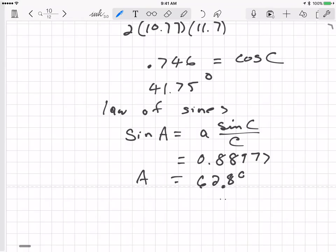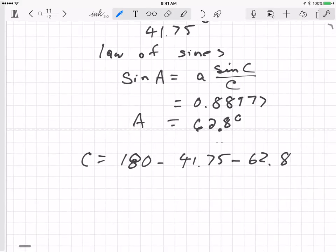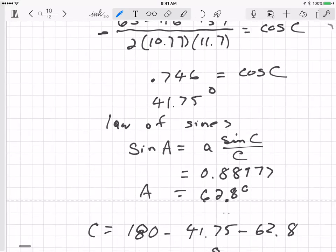Okay, now if I know the angle for A and I know the angle for C, I should be able to find the angle for B using the fact that the sum of the three angles has to be 180 degrees. So B is equal to 180 minus 41.75 minus 62.8. So we can do that. So I get 180, 180 enter, 41.75, subtract, 62.8, subtract, and I get 75.45 degrees.